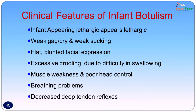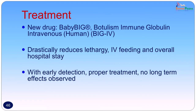Initially no effective immunoglobulin was available for children, but a new drug — baby BIG (botulism immunoglobulin) — can now be given intravenously in these babies. It drastically reduces lethargy; intravenous feeding and overall hospital stay can also be decreased by giving immunoglobulins well in time. With early detection and proper treatment, no long-term effects are observed.